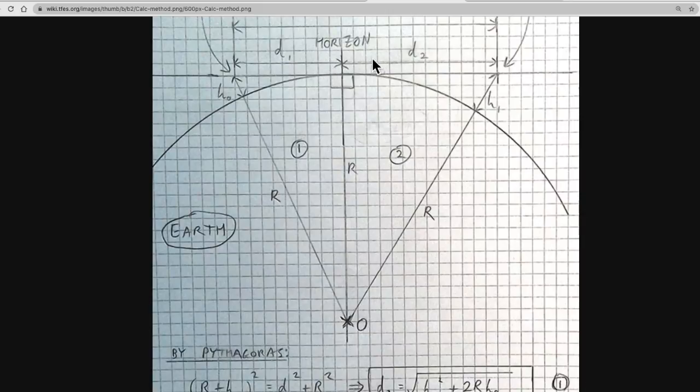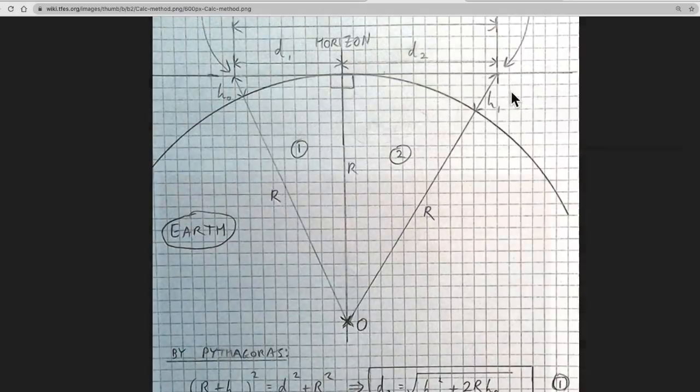Once we know that, we know this leg because we know the total distance between the observer and the building. Once we have this value and the radius of the Earth, we can determine this hypotenuse of this triangle and come up with the amount of the building that's hidden here.